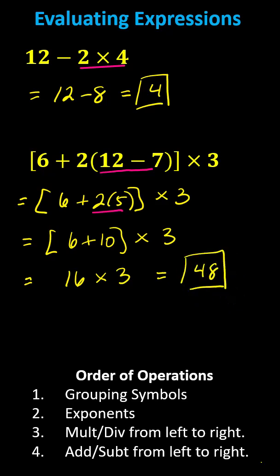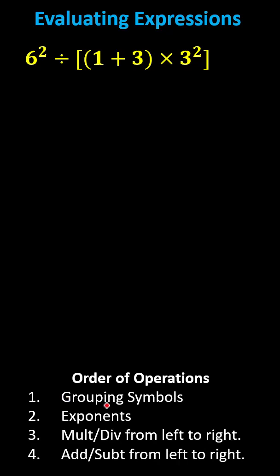And now let's look at the last example. Again, the first step is to simplify inside the innermost grouping symbols, which indicates the first step here is to determine 1 plus 3, which is 4.